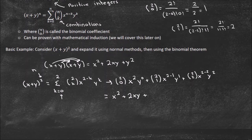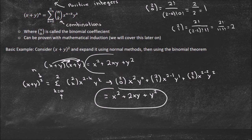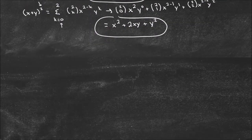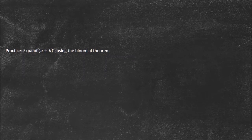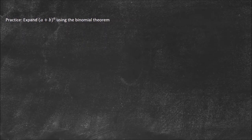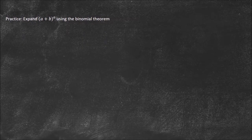And x to the (2 minus 2) is x to the 0, which is 1, so we just have + y². Notice this matches our FOIL result exactly — that's how you use the Binomial Theorem. For this simple example it might seem harder, but you'll see in a second that it really does make things much easier. Now we're going to expand (a + b)⁶ using the Binomial Theorem.